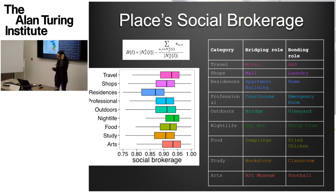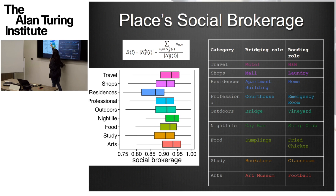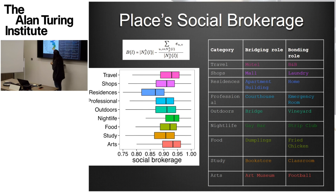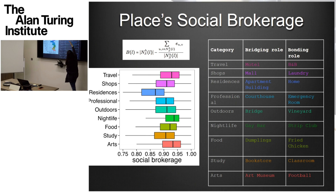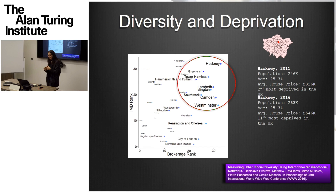We looked at what categories of places had higher brokerage. Residences have a bonding effect — the opposite of brokerage — tending to cluster people who already know each other. Art, museums, and travel are on the other side with high brokerage. Looking at subcategories, you can see things like the bridging role of an apartment building versus the bonding role of a mall — patterns that make intuitive sense, though some sub-category results like dumplings versus fried chips are harder to interpret.